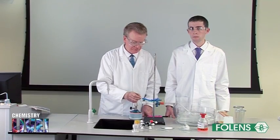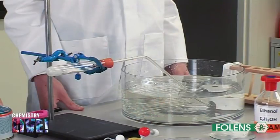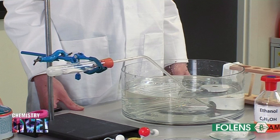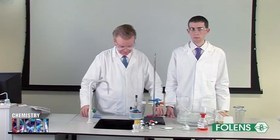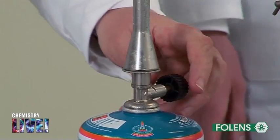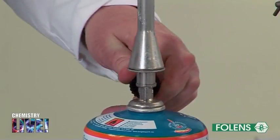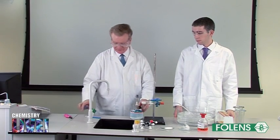The apparatus to collect the ethene gas is set up as shown and the gas is collected over water. Light the Bunsen burner, adjust it to give a blue flame, and gently heat the aluminium oxide.